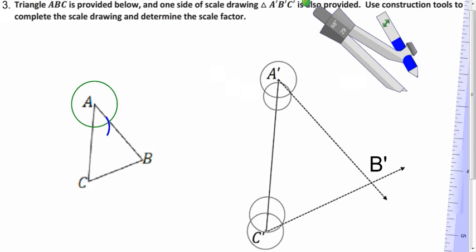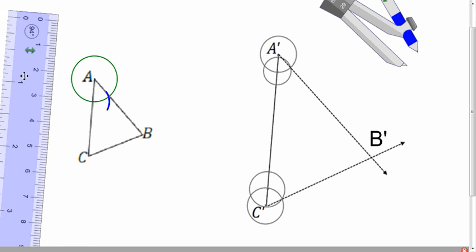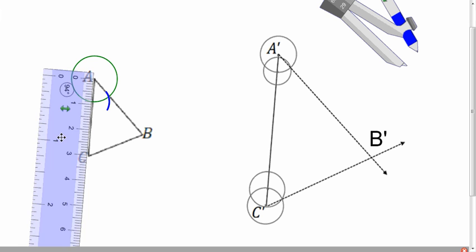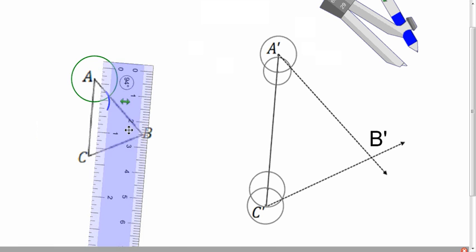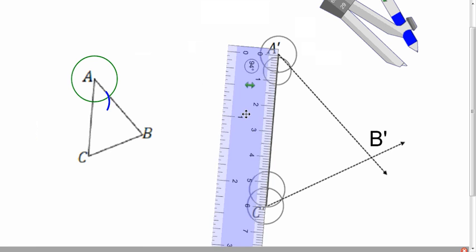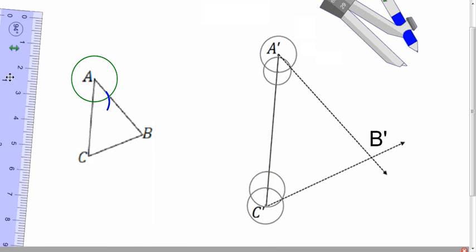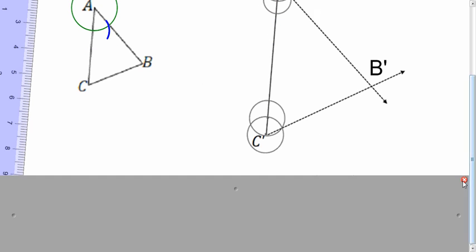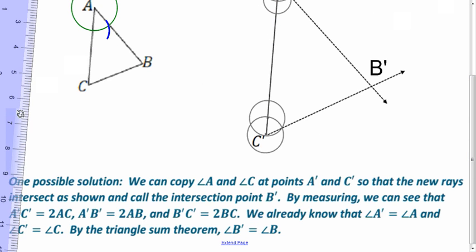And let's see, how can we figure out what the scale factor is? So now if we measure, let's see, AC is 3 centimeters. And let's see, A prime, C prime is 6 centimeters. So 6 divided by 3 is 2. So the scale factor is 2. And this little explanation here for what we did is one way to do it. So we copy those angles like we said. And when we measure it, it turns out that the other sides are also in the same proportion.